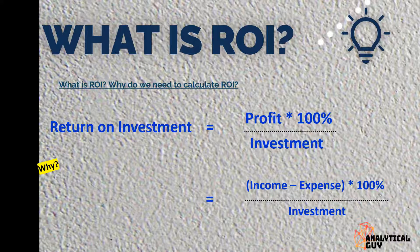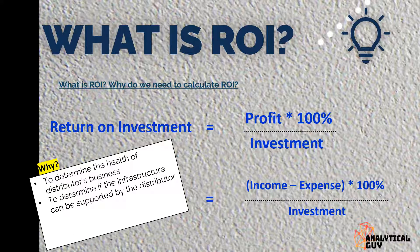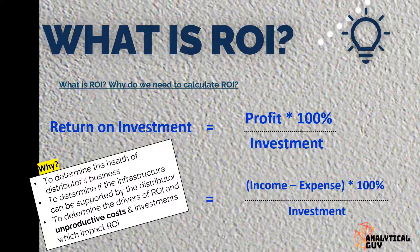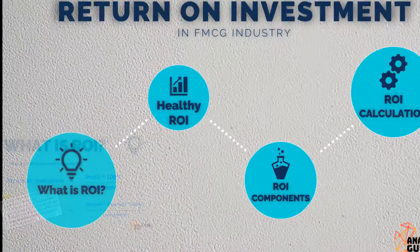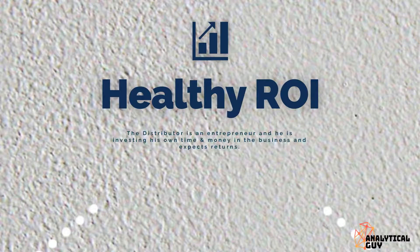Why are we calculating ROI? First, to determine the health of the distributor's business. Second, to determine if the infrastructure can be supported by the distributor. Third, to determine the drivers of ROI and identify unproductive costs and investments which impact ROI. Sometimes while calculating ROI you get to know which components are not productive and can be eliminated.